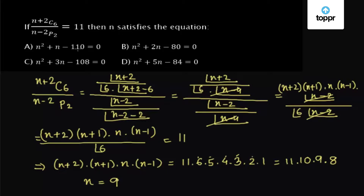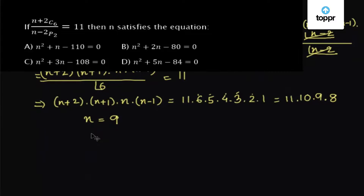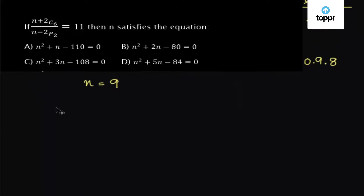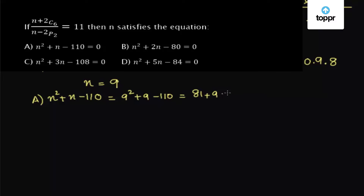Now we substitute n=9 into each equation to see which is satisfied. For the first equation, n²+n-110=0: we get 9²+9-110 = 81+9-110 = -20, which is not equal to 0. So n=9 does not satisfy this equation.